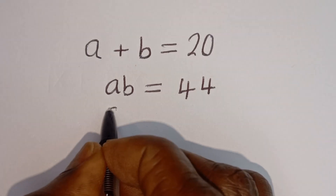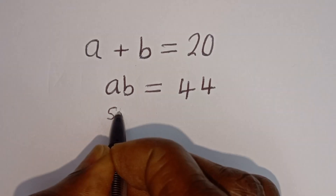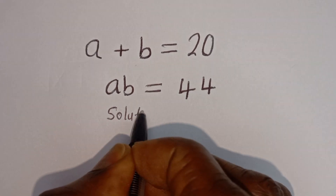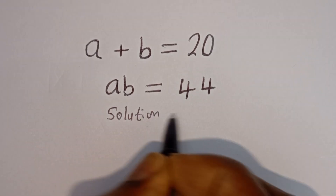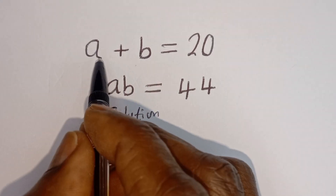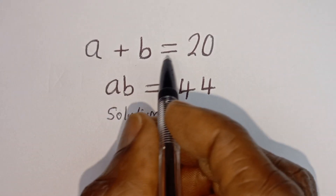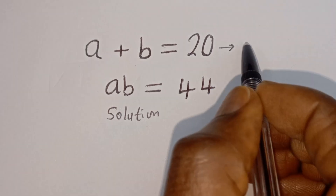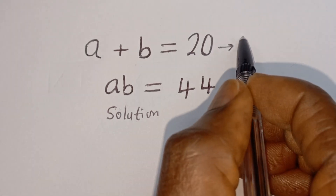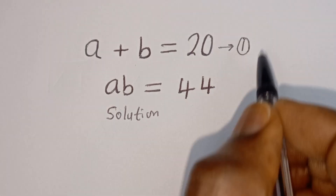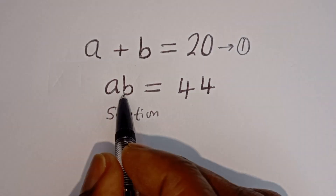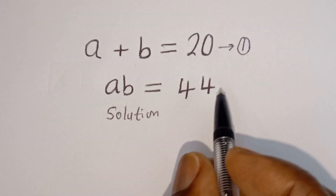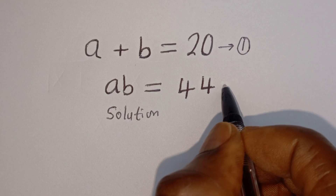Solution. From here, a plus b is equal to 20 — let's call this equation 1. And from here, ab is equal to 44 — let's call this equation 2.